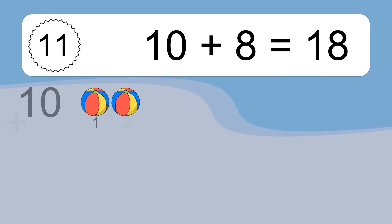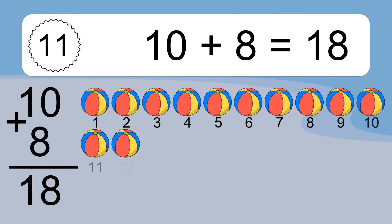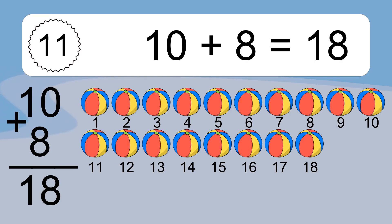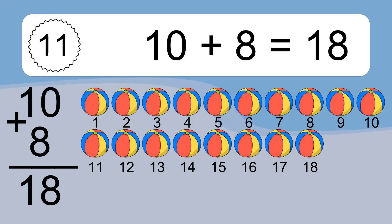10 plus 8 equals 18. Let's count it. 1, 2, 3, 4, 5, 6, 7, 8, 9, 10, 11, 12, 13, 14, 15, 16, 17, 18.